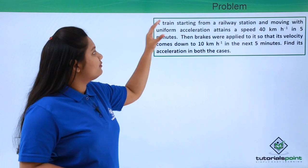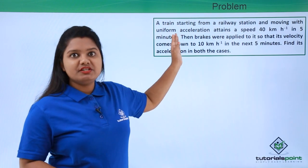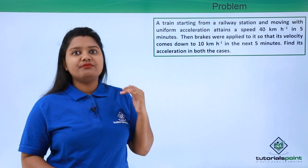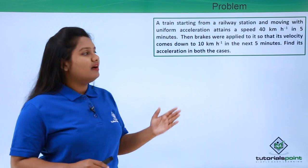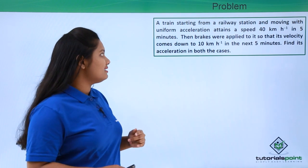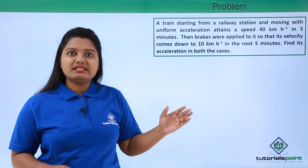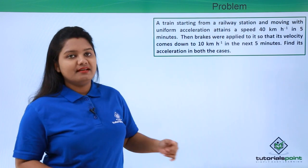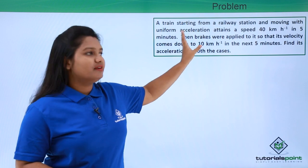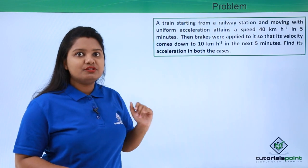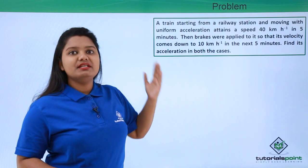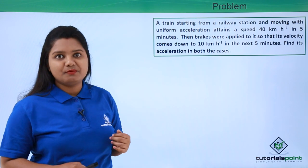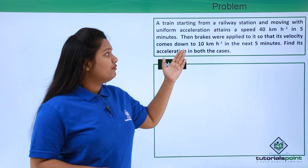This problem comprises two parts. In the first part, the train starts from rest at the railway station and in five minutes attains a speed of 40 kilometers per hour. After that, brakes are applied and the velocity comes down to 10 kilometers per hour in the next five minutes — this is part two. In both parts, we need to find the acceleration of the train.